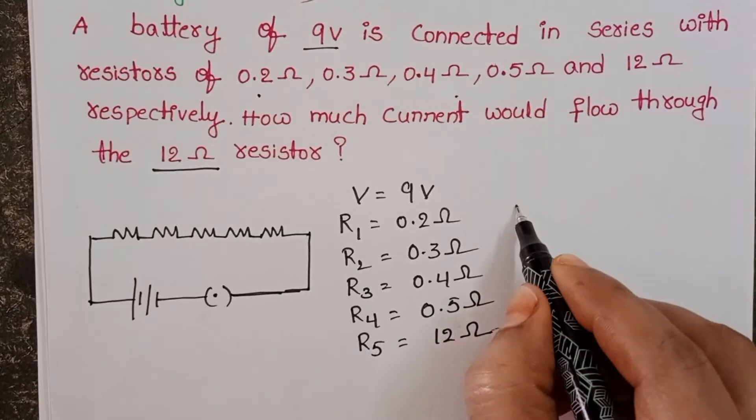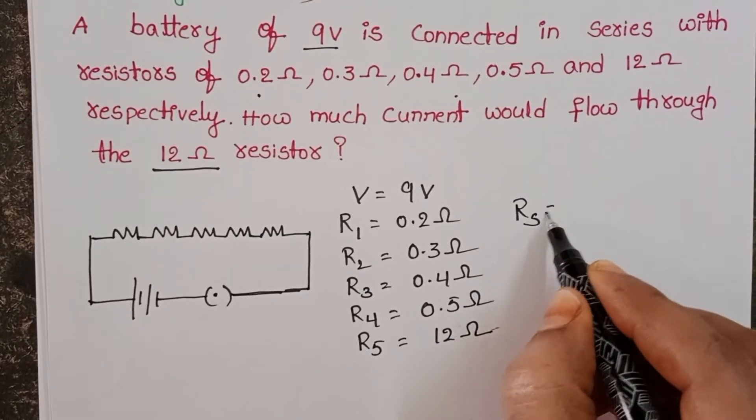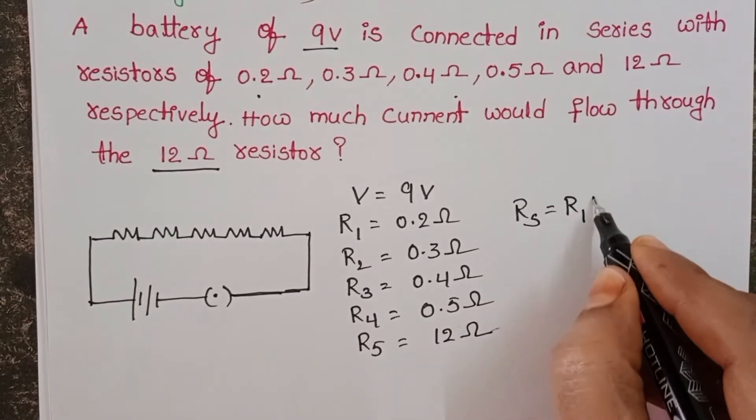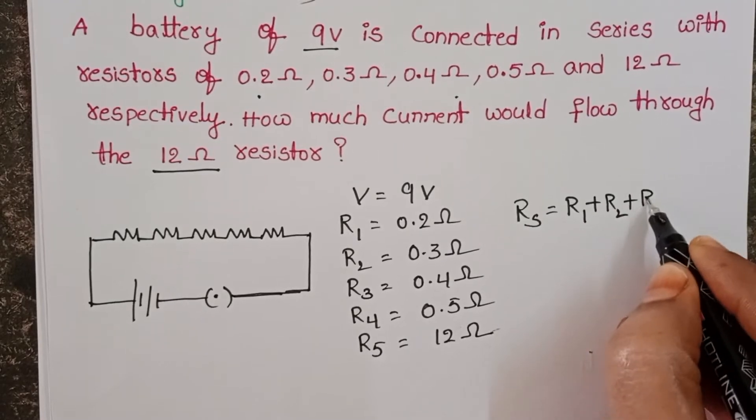When resistors are connected in series, the equivalent resistance of the circuit becomes the sum of resistances of all the resistors.